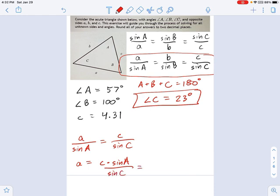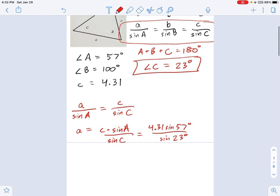Now I just plug in numbers. So that's going to be 4.31 times the sine of 57 degrees divided by the sine of 23 degrees. So we get from that, a equals 9.2510.